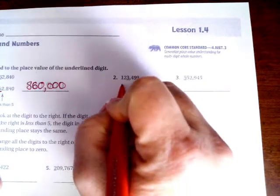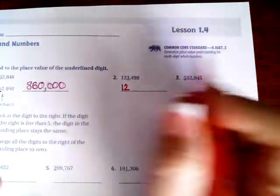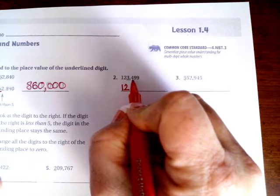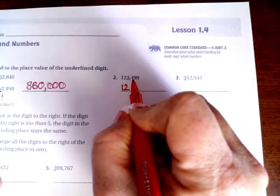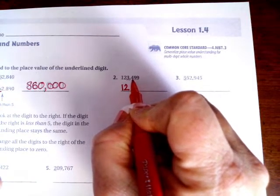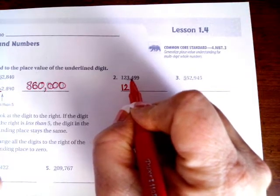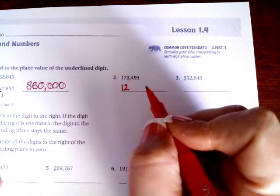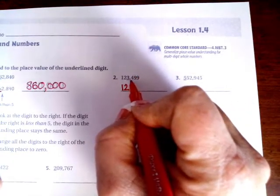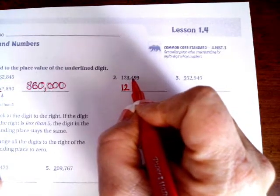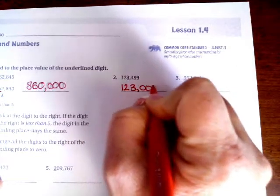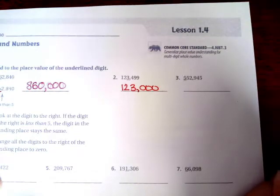So the numbers beforehand stay the same. Now I'm going to look at the number next door to the underlined number. If it is a 0, 1, 2, 3, or 4, then that 3 is going to stay the same. If it is 5, 6, 7, 8, or 9, the number is going to go up — the 3 is going to go up to a 4. The number is a 4, which is less than 5, so my 3 is going to stay the same. Then every number afterwards becomes a 0.